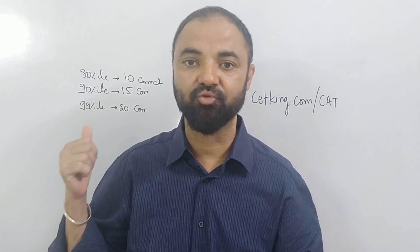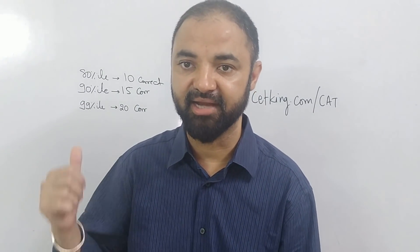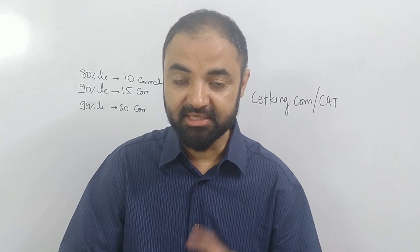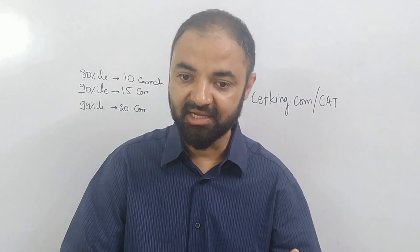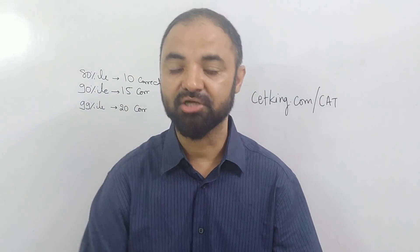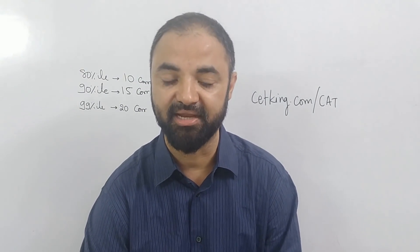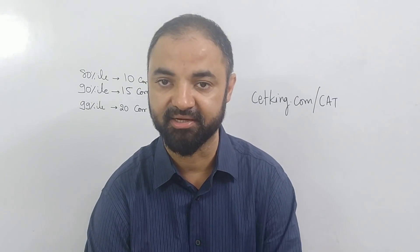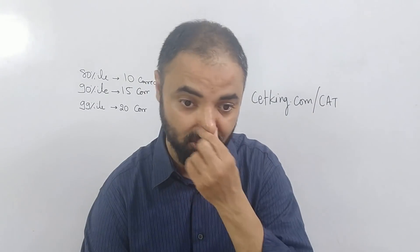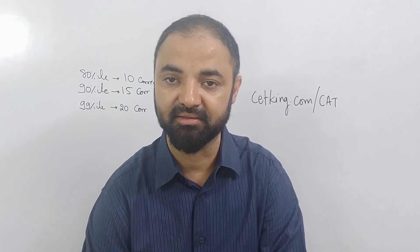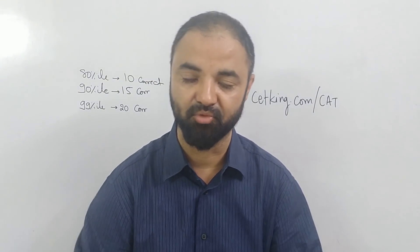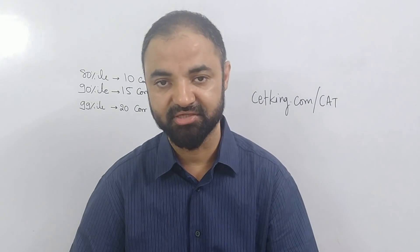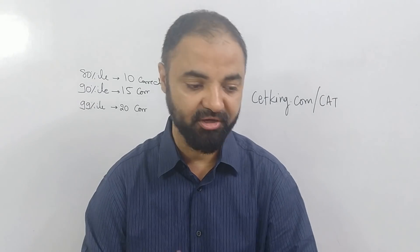To get 80 percentile you need 10 questions correct. For 90 percentile, 15 correct. And 99 percentile is 20 questions correct. How you attempt and manage is your problem, but this is the number you have to touch. The quant section is a speed game. To get 15 correct, I need to solve a minimum of 18 to 20 questions so that even after 3-4 wrong and negative marking, I still land 15-plus correct. These are correct questions, not just attempts.